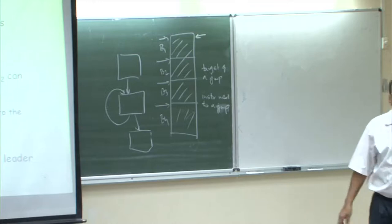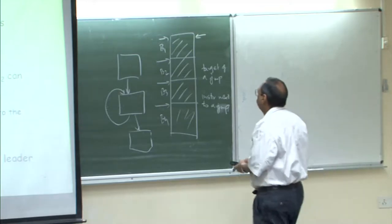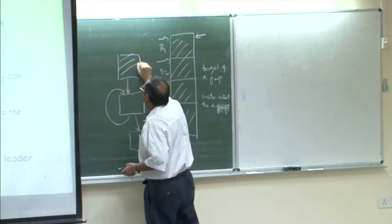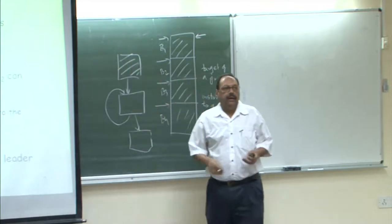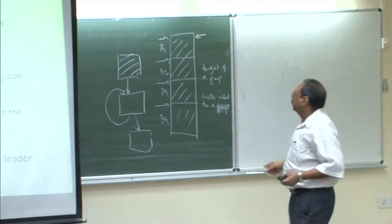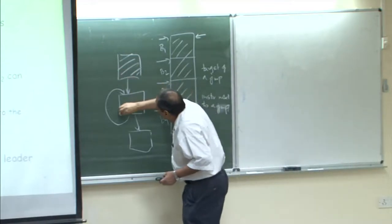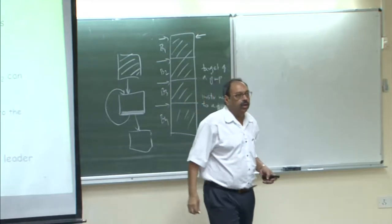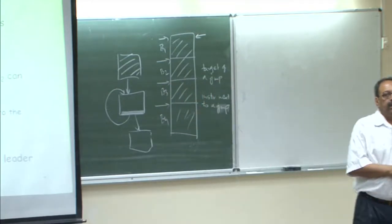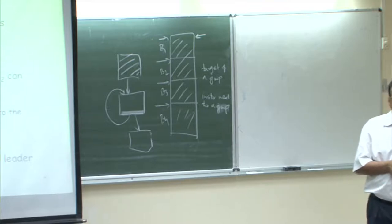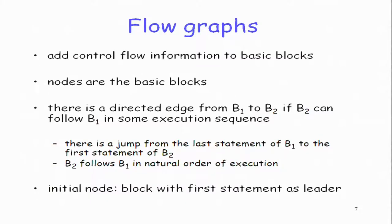All further code generation will be done on the control flow graph. Within a basic block, we can generate straight-line code. If the last instruction is a conditional or unconditional jump, we generate a different kind of instruction. Jump three-address instructions are mapped onto machine instructions in a slightly different manner. Taking three-address code and converting it into basic blocks and then a control flow graph makes the process structured and easy to understand.